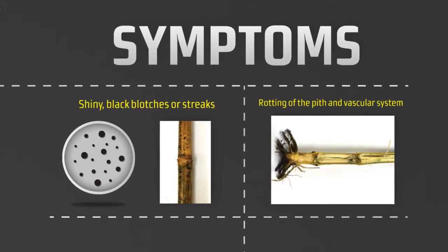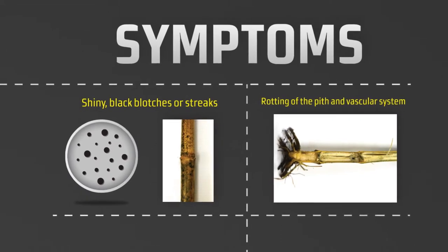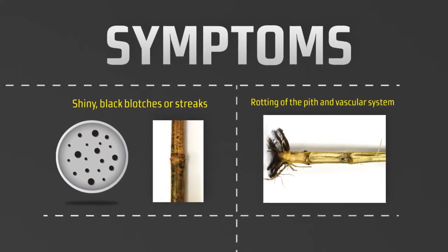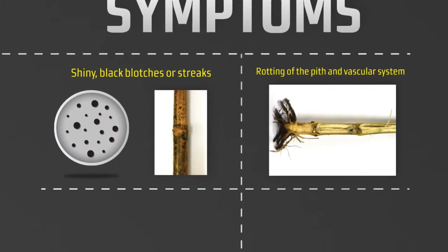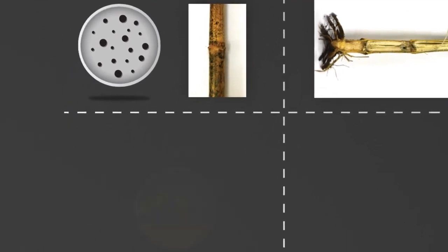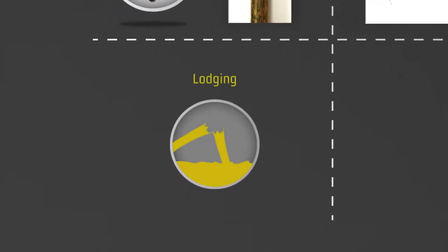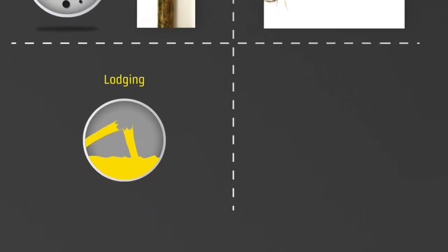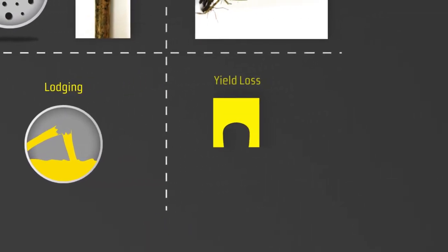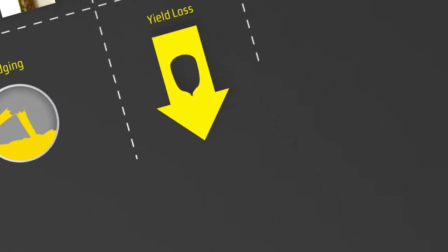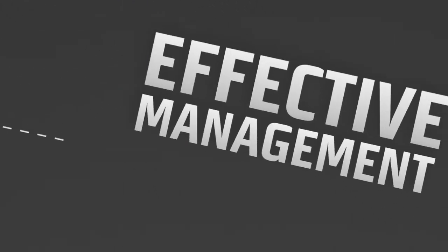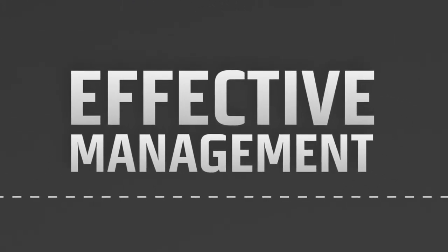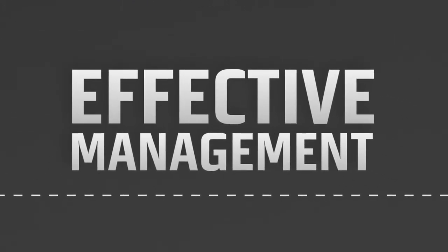The pathogen also rots the pith and vascular system, which reduces the plant's ability to get water. Rotted stalks can also lodge, causing increased harvest time and additional yield loss.